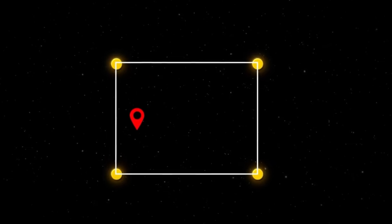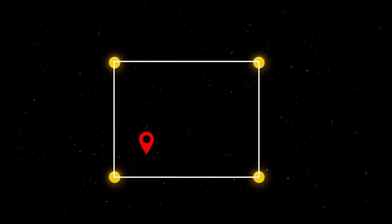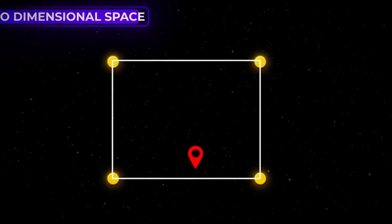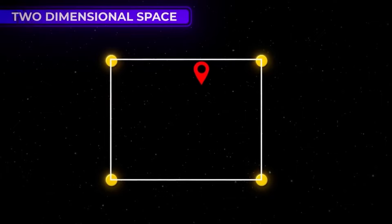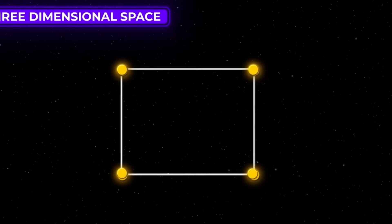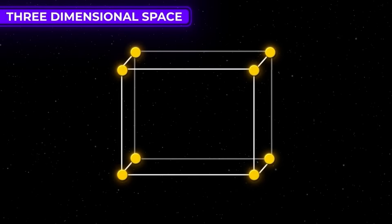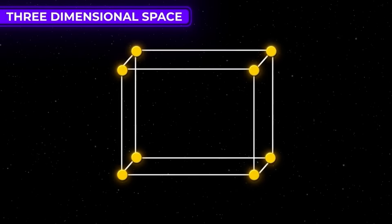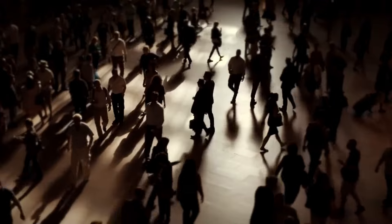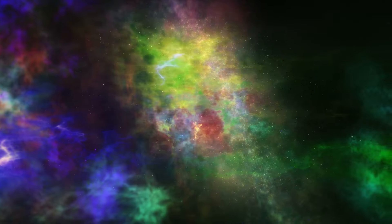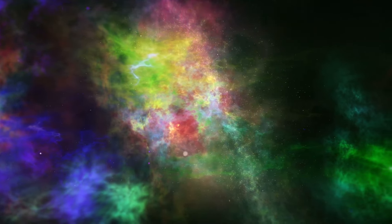To understand this in a more practical sense, think about your daily life. When you walk down the street, you move forward — that's one dimension. You can also move left or right, adding a second dimension. Lastly, you can jump, adding the third dimension. Together, these three dimensions shape our physical reality.